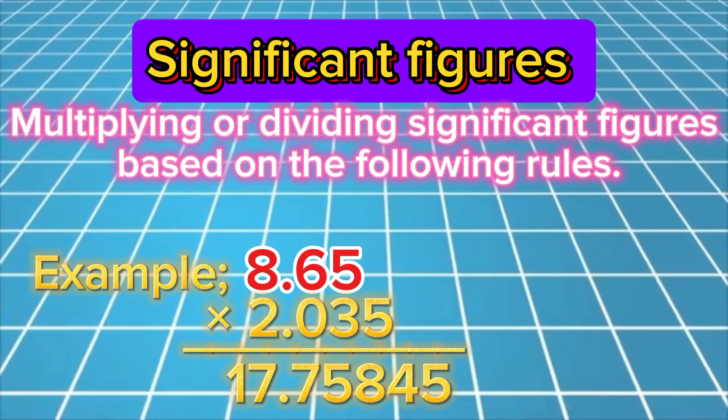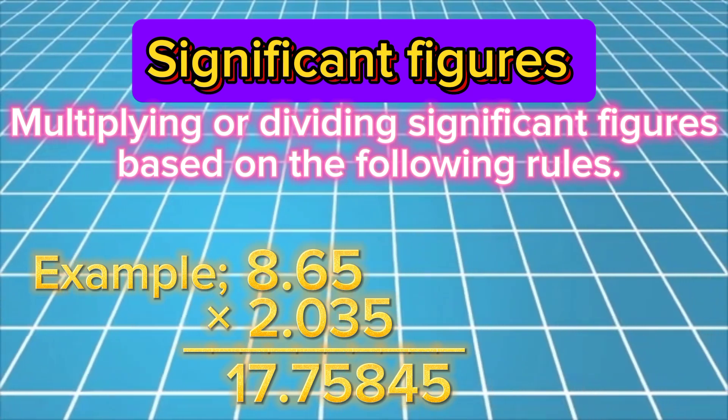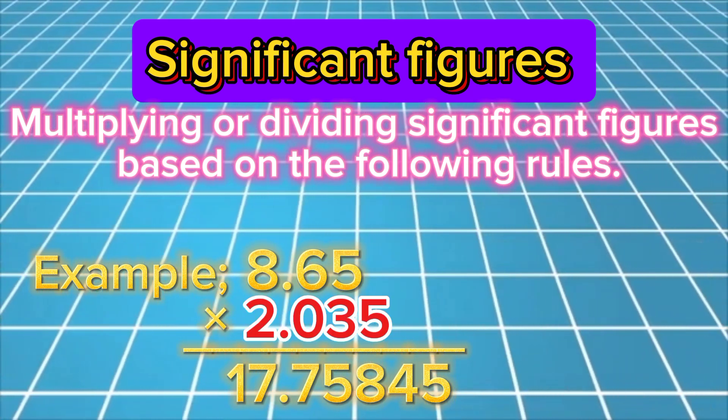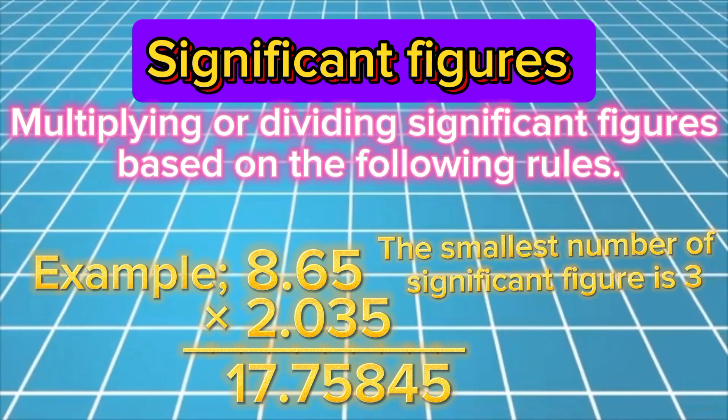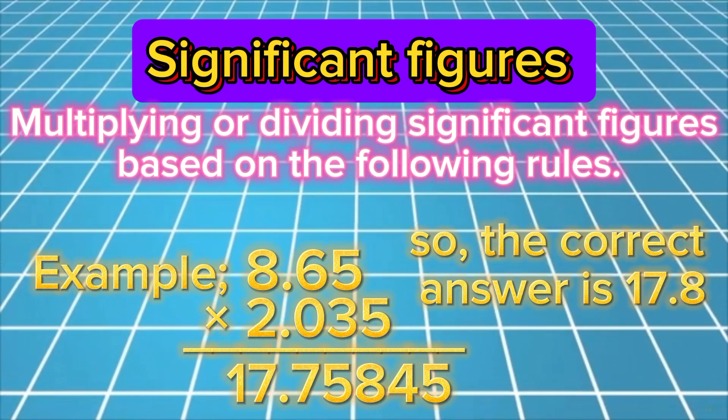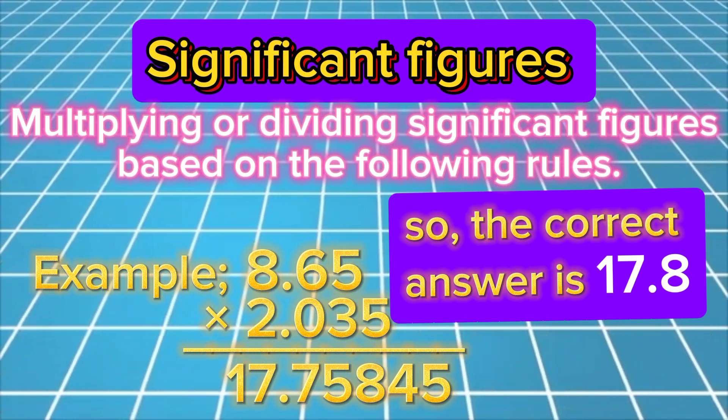The first number, 8.65, has three significant figures, and the second number, 2.035, has four significant figures. According to the rule, the smallest number of significant figures is three. So, the correct answer is 17.8.